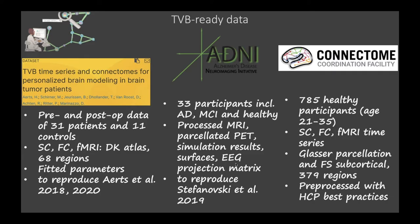This is a particularly nice approach to constrain brain network models with empirical data. The dataset includes all simulation results, surfaces, and an EEG projection matrix to map the raw time series on a neural level to the EEG. For the Human Connectome Project data, we have data from 785 healthy young persons with structural and functional connectivity and region average fMRI time series, generated using the Glasser parcellation together with subcortical regions, yielding 379 regions, all pre-processed with the HCP minimal processing pipeline.